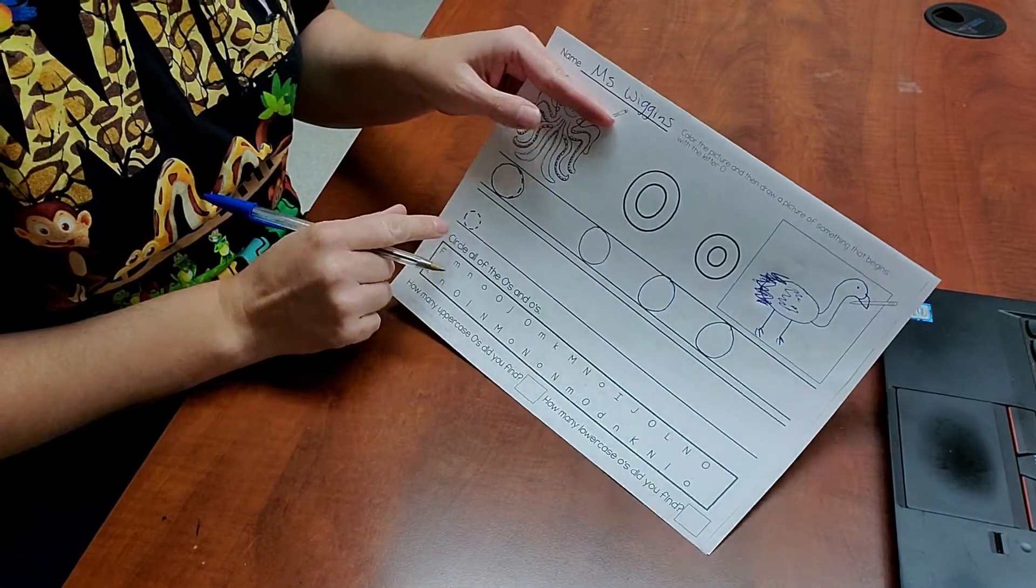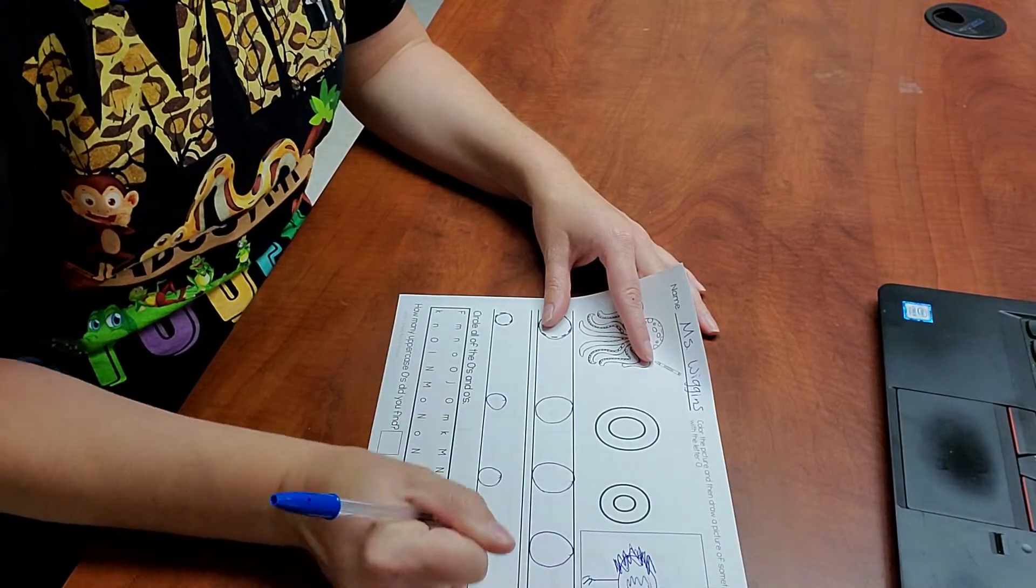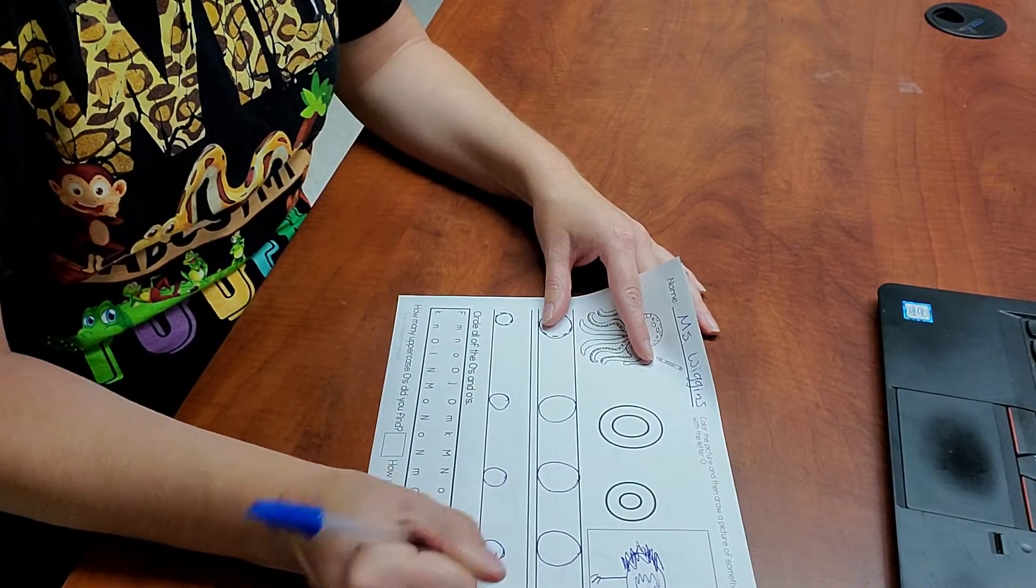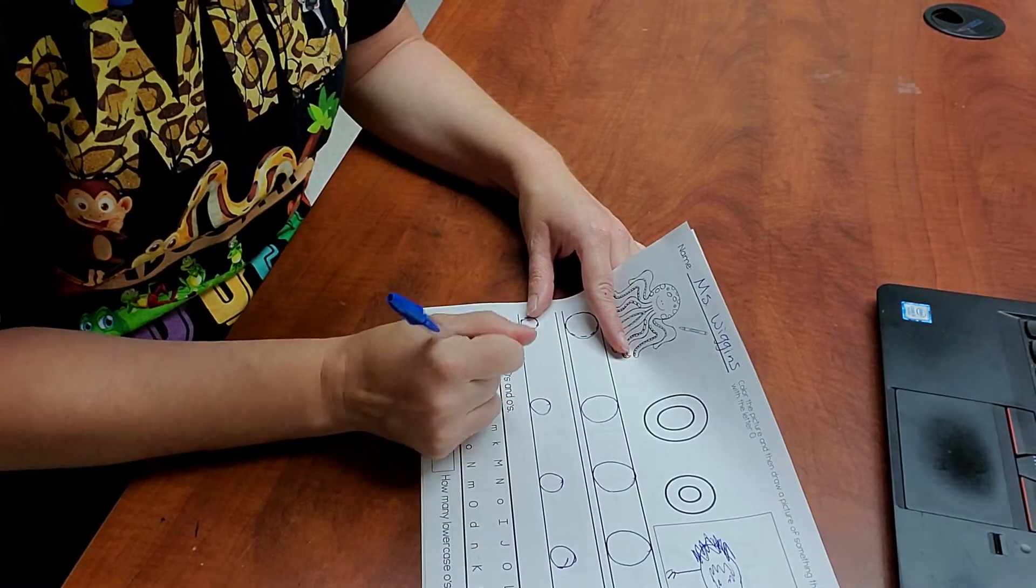Trace your lowercase O. One. And then write three of them yourself. And then down here, you just have to circle your uppercase and lowercase O's.